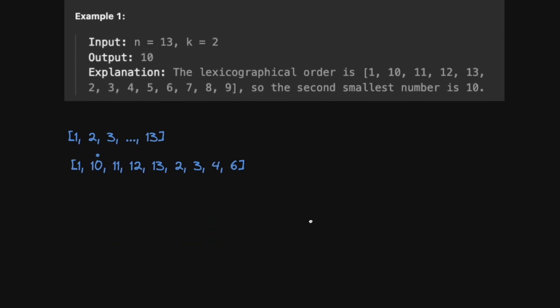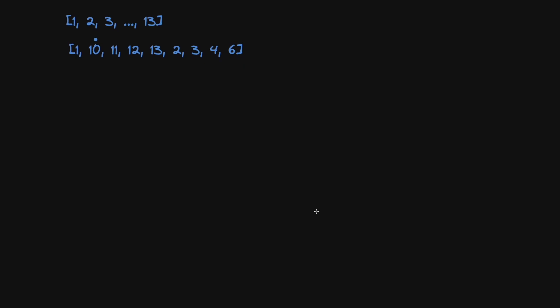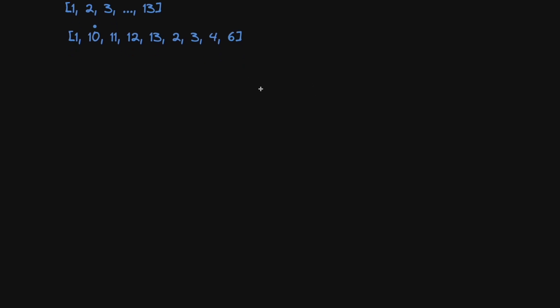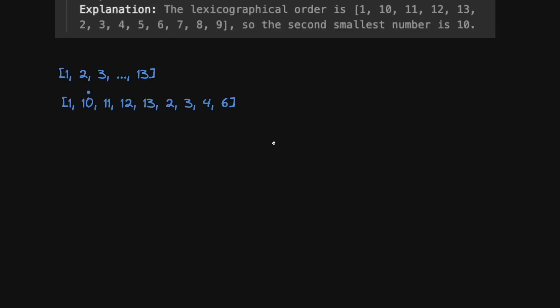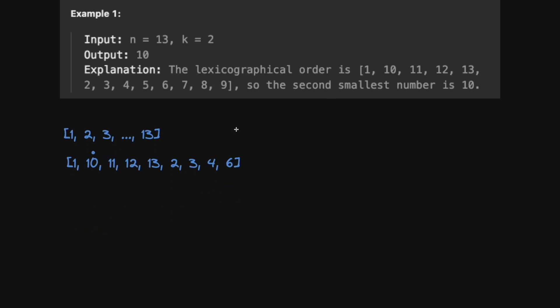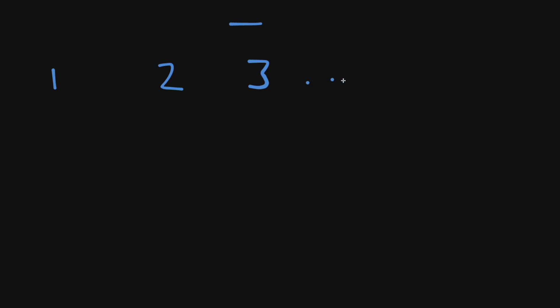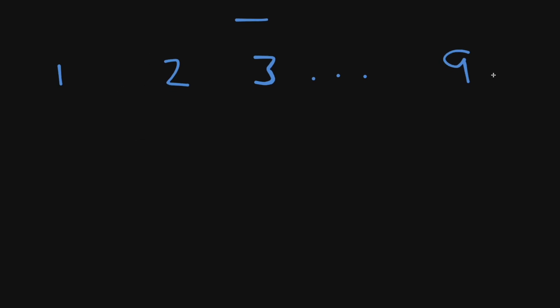The approach we're going to use is actually very interesting — we're going to build a tree. We don't consider 0 because we work from 1 to n. The root is blank, and then at the first level we have the digits 1 through 9.